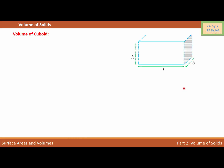Volume of solids. Let's find the volume of a cuboid. In order to find the volume of a cuboid, I'm going to draw a cuboid. So this is my cuboid. As you can see, the length of the cuboid is l, the height of the cuboid is h, and the width of the cuboid is b.